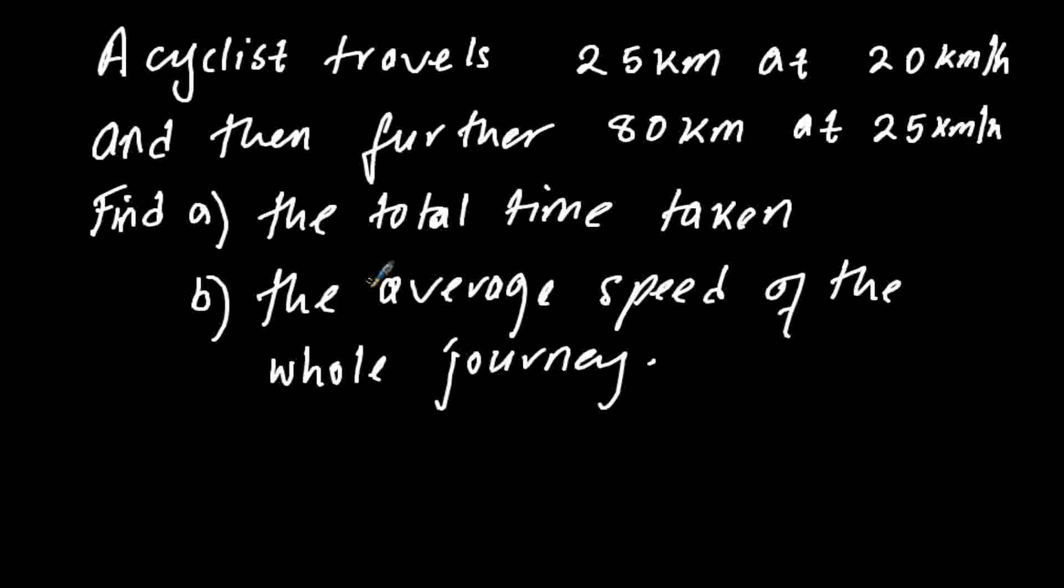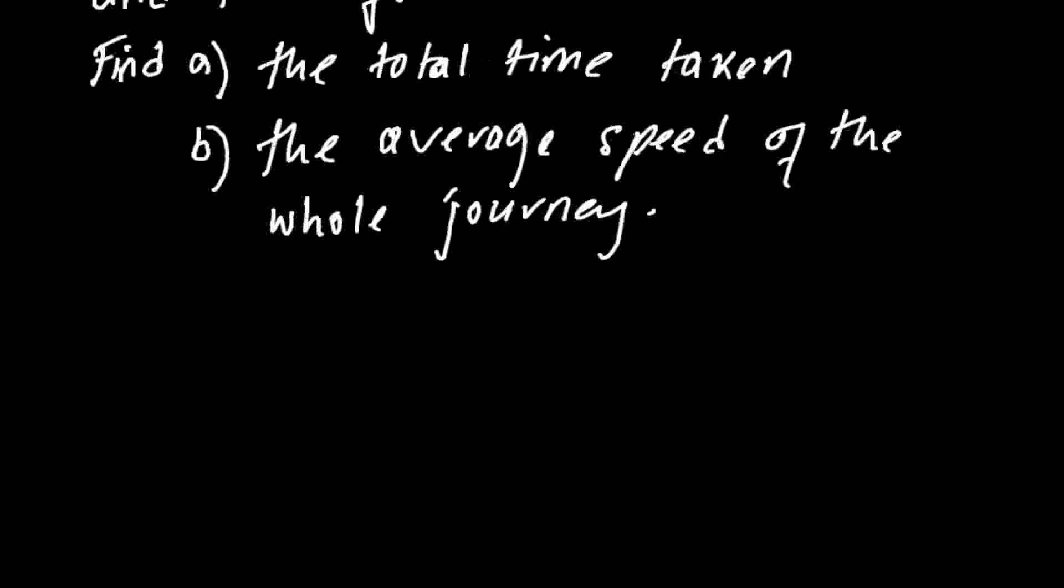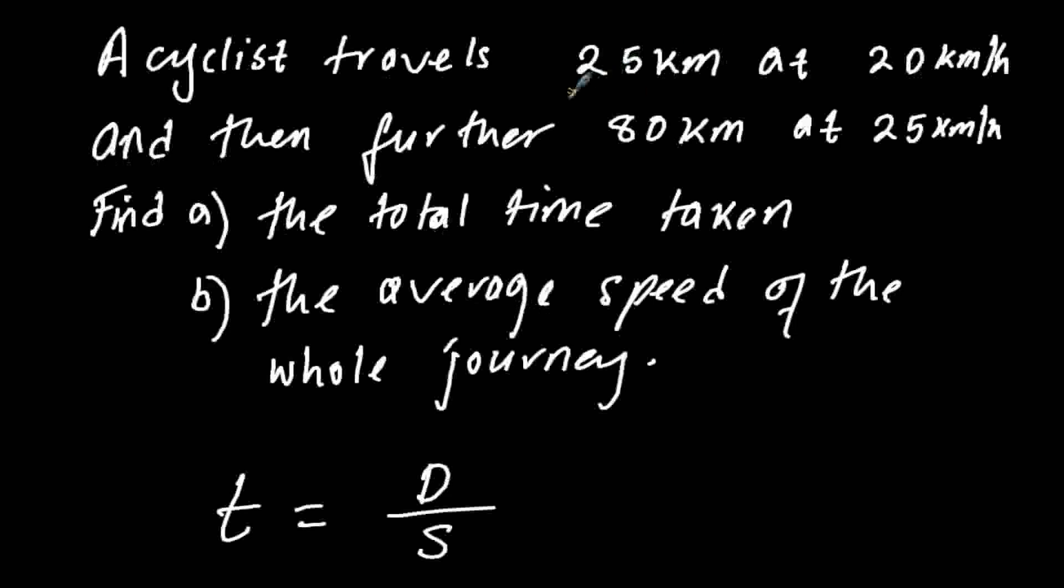So we shall use the formula for time which is t equals to distance divided by speed. To find the total time you have to first find the time for these different parts of the journey, so we are going to first find this part.